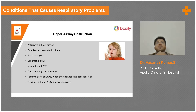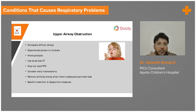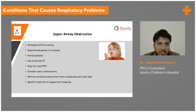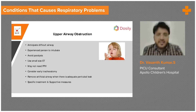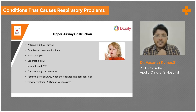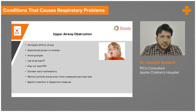In some cases, if the obstruction is nearly complete and you are not able to bypass the airway, you may have a cannot intubate, cannot ventilate situation. You then do something called FONA — front of neck access. You either do a cricothyrotomy or even an emergency tracheostomy may be needed.